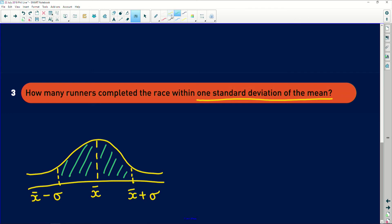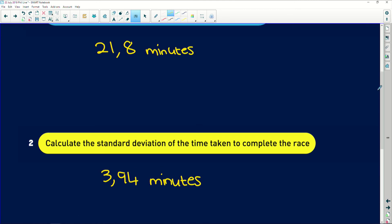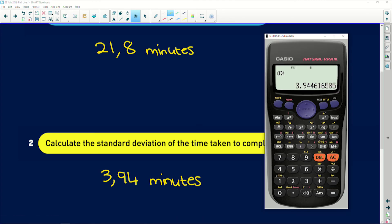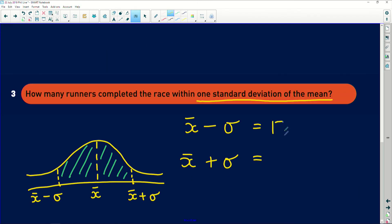You need to work out both of them. So we need to work out the mean minus a standard deviation and the mean plus a standard deviation. So here we have our mean and standard deviation. So the mean, 21.8 minus one standard deviation, 3.94, is equal to 17.86. And that's in minutes.